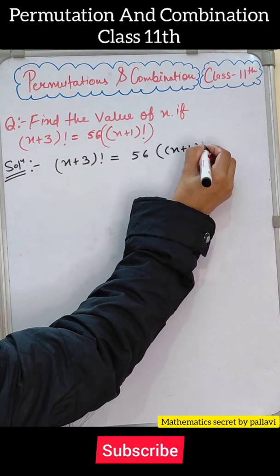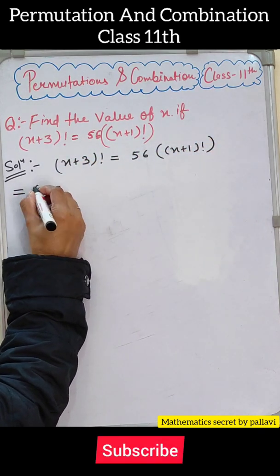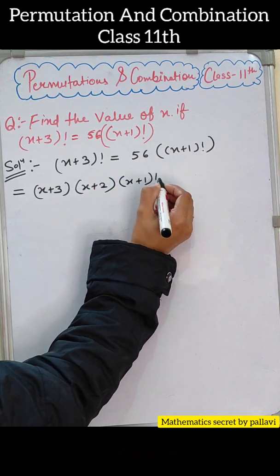The question is: find the value of n if (n+3)! = 56(n+1)!.